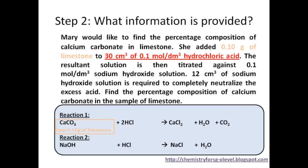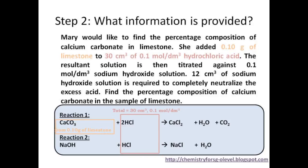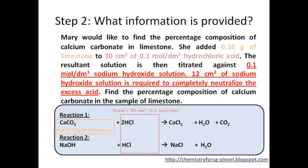Let's look for the next piece of information. We see 30 cm³ of 0.1 mol per dm³ of hydrochloric acid. Reading the question further, you'll notice that 30 cm³ of 0.1 mol per dm³ hydrochloric acid is used for both reaction 1 and 2. The reason is that the acid in reaction 1 is in excess and is only completely neutralized in reaction 2. The next numbers are 0.1 mol per dm³ sodium hydroxide, with a volume of 12 cm³ used.